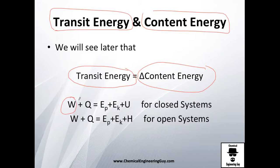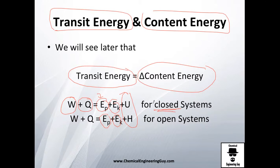Transit energy — which I told you is work and heat — will equal the changes in potential energy, kinetic energy, and this one, which is a special change. If it's a closed system, this will be U.